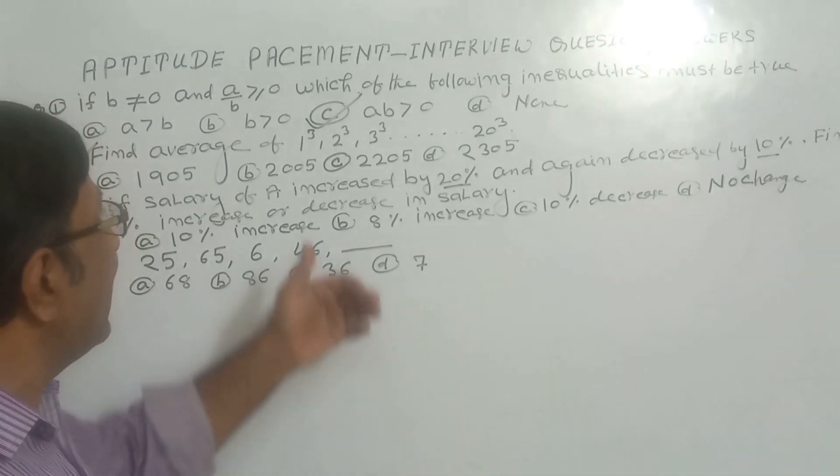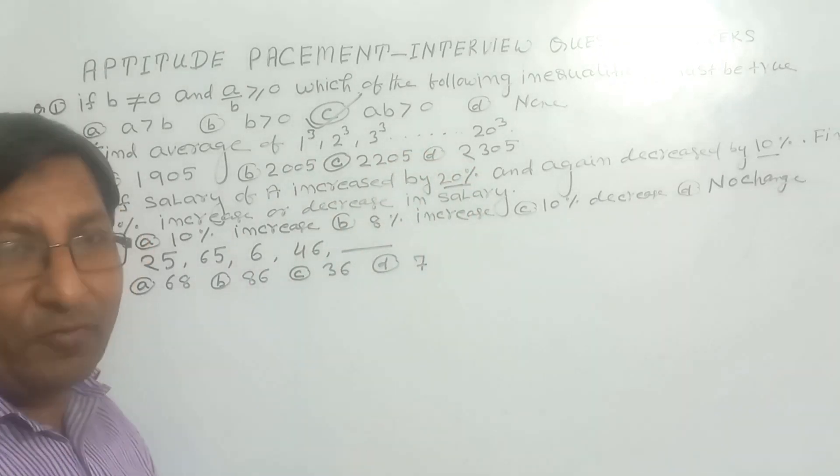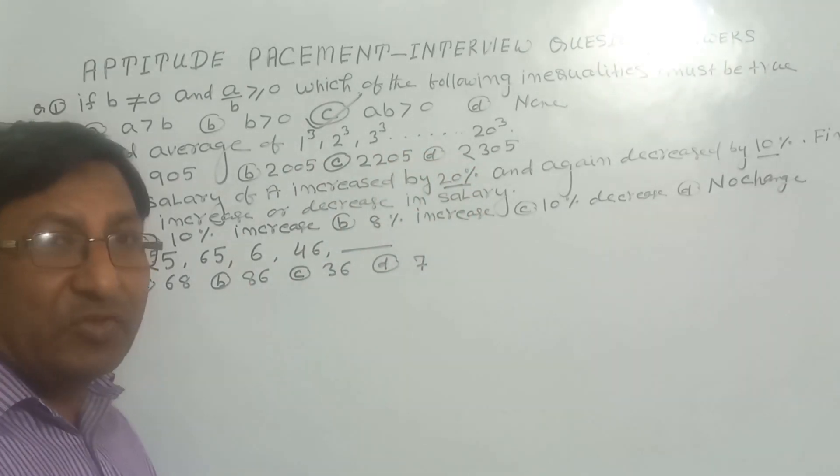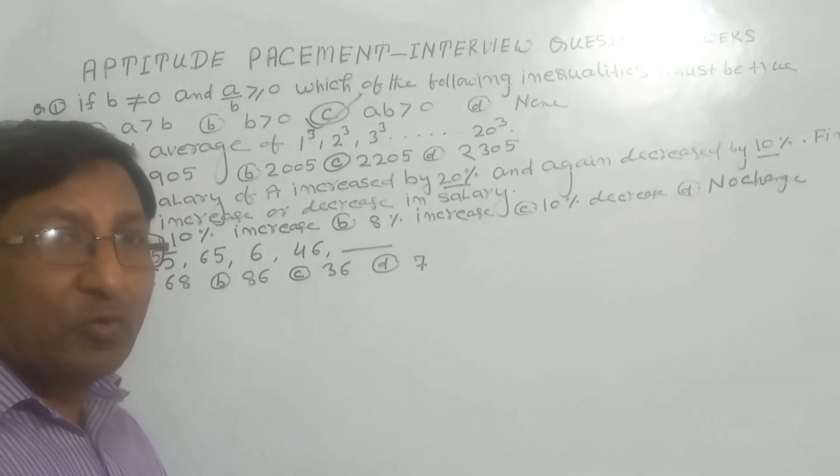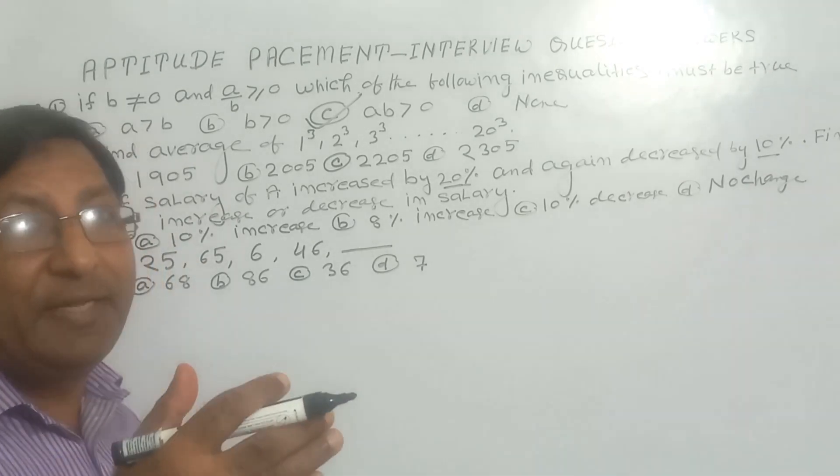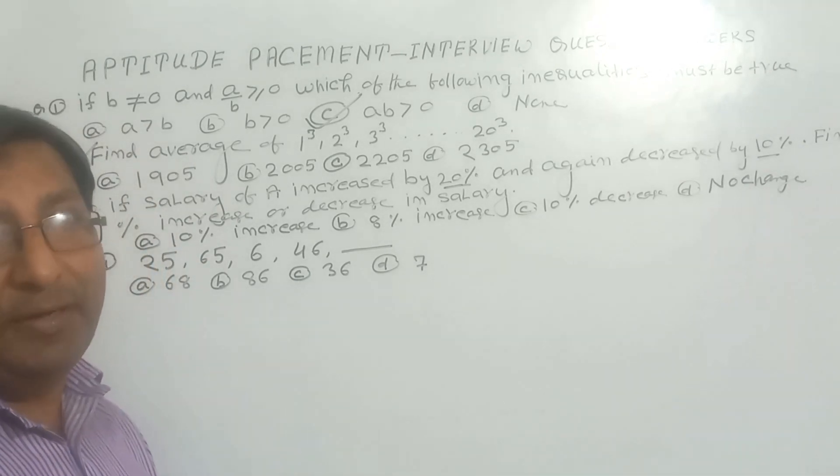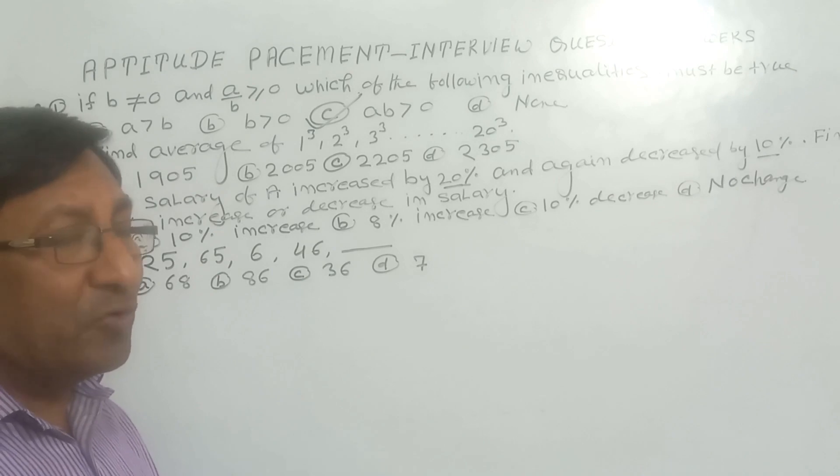When we apply this formula here, it will take a lot of time because given observation is 1Q, 2Q, 3Q up to 20Q. So correct answer will be 1Q plus 2Q plus 3Q up to 20Q divided by 20. So it will take a lot of time. So there is a simple technique to solve this question.